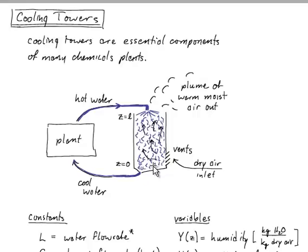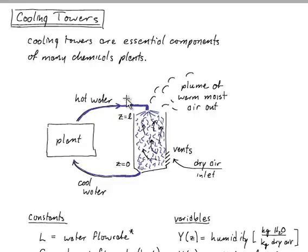A cooling tower is that tall structure at the edge of the plant with the big plume of steam coming out of it — really just warm moist air condensing. Hot water comes out of the plant and a sprayer disperses that water over some packing or wooden slats inside the column.